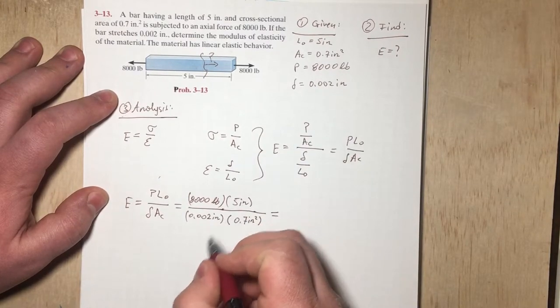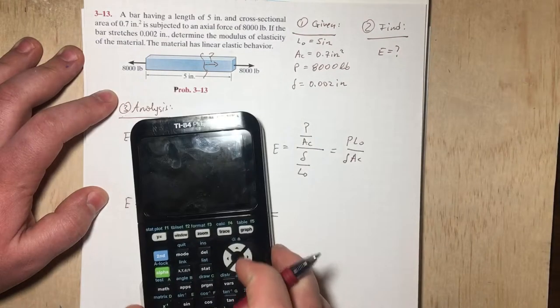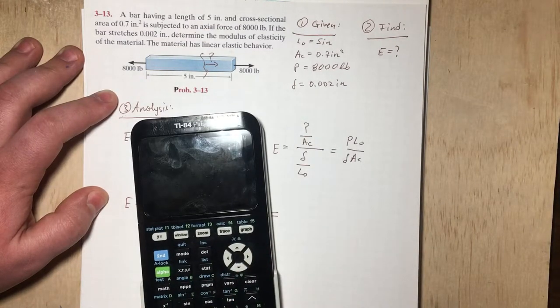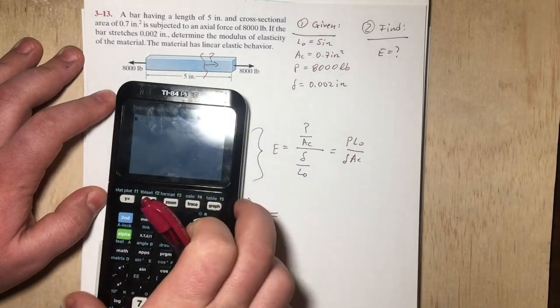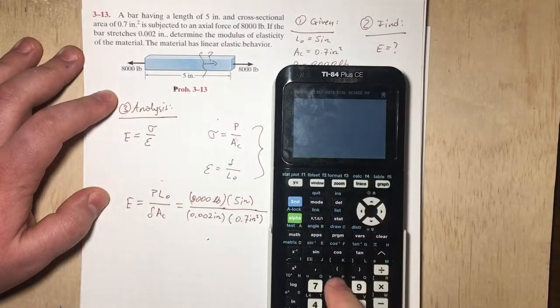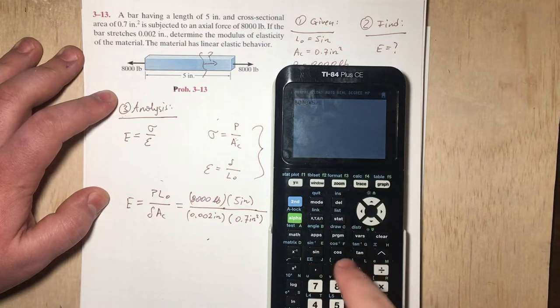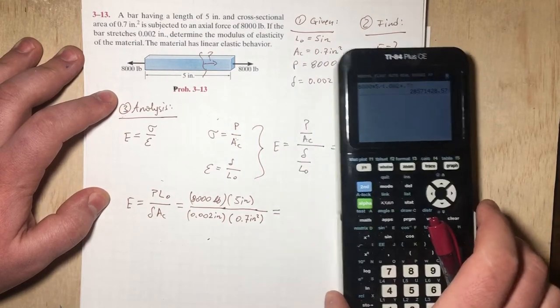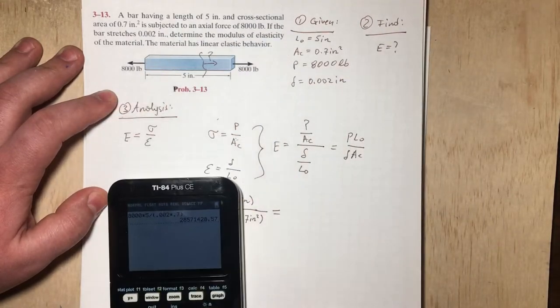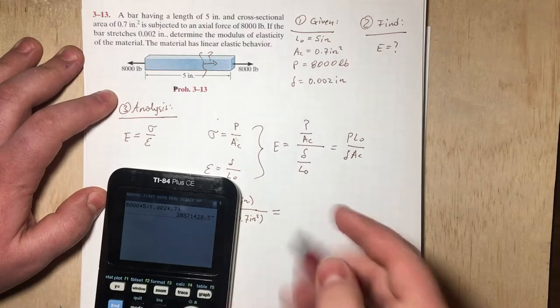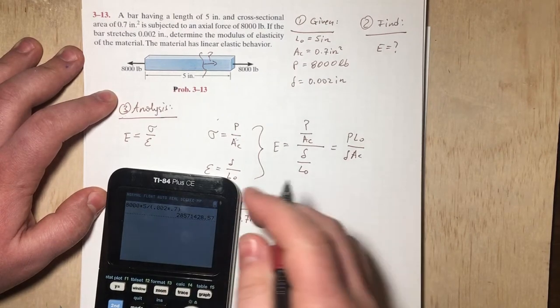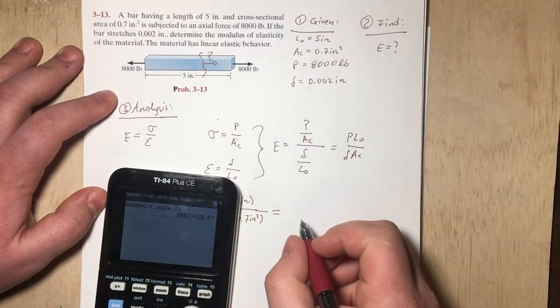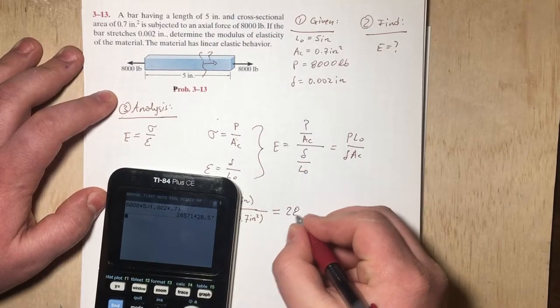So we have pounds and inches, so we're going to end up with a pound per square inch, so psi. So let's go ahead and plug that into the calculator and see what we get. So we got 8,000 times 5 divided by 0.002 times 0.7. And we get a pretty large number, which actually is a good sign, because the modulus of elasticity is actually quite big.